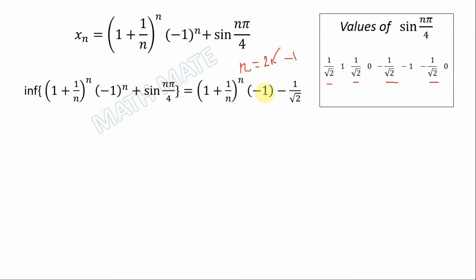So then we have minus 1 because minus 1 to the power of odd number of n, that's minus 1. And for sine among them the minimum value is minus 1 over square root of 2.